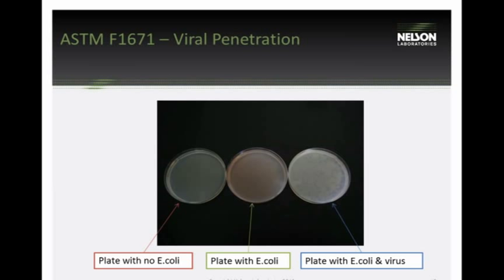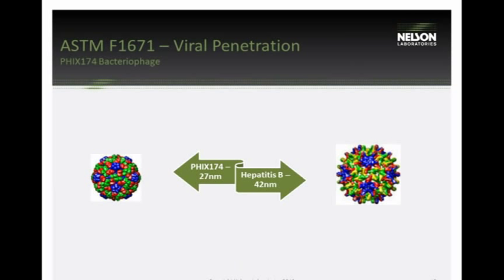The PhiX174 bacteriophage is very small — 27 nanometers — compared to hepatitis B, one of the smallest known human pathogens at 42 nanometers. It's small, almost spherical, actually icosahedral with 20 sides. It's non-enveloped and non-charged, and not pathogenic to humans, making it suitable for laboratory use.